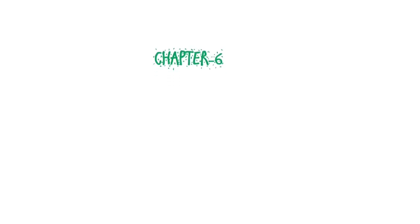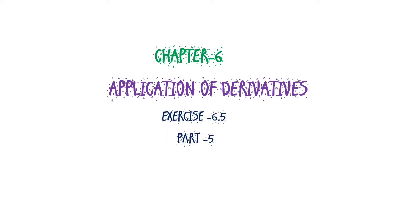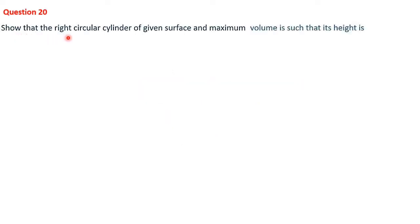Dear students, welcome back to a new mathematics session. In today's session we shall discuss questions 20 to 23 from Exercise 6.5. Let's begin with question number 20: show that the right circular cylinder of given surface and maximum volume is such that its height is equal to the diameter of the base.